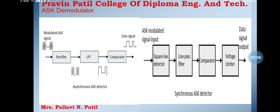The synchronous ASK demodulator consists of a square law detector, a low-pass filter, a comparator, and a voltage limiter. This is the block diagram showing the square law detector, low-pass filter, comparator, and voltage limiter.